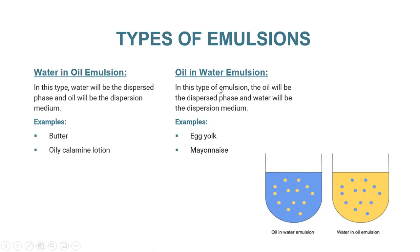On the other hand, in oil-in-water emulsions, oil will be the dispersed phase and water will be the dispersion medium, which means oil droplets will be dispersed throughout the aqueous phase. Examples of this type of emulsion include egg yolk and mayonnaise.